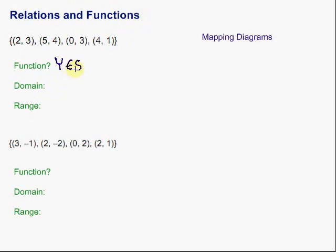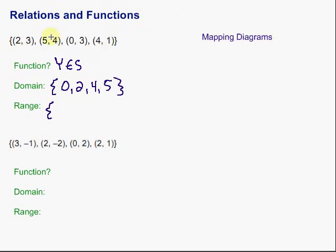The domain of this situation — we just pick out the x-values and list those out, usually in order. So we start with 0, then we have 2, 4, and 5. So the domain of that function is {0, 2, 4, 5}. Now the range is the set of y-values. The y's are 3, 4, 3, and 1. I'm going to put them in order, and if they show up more than once, I only have to write them once.